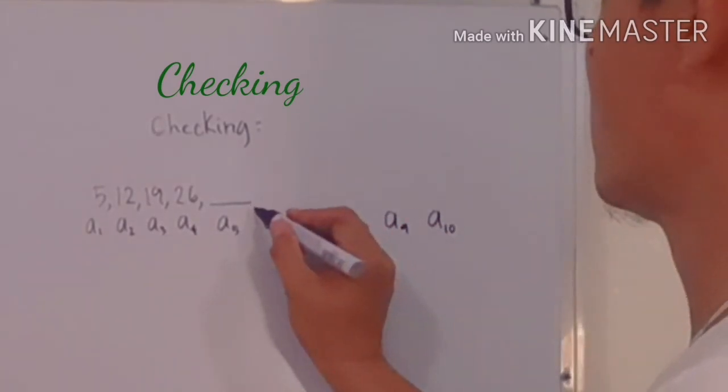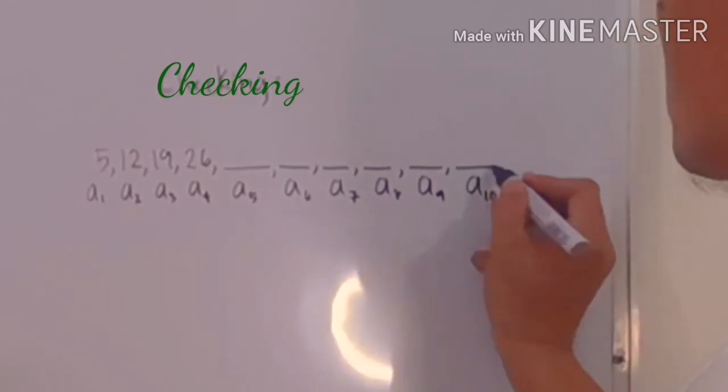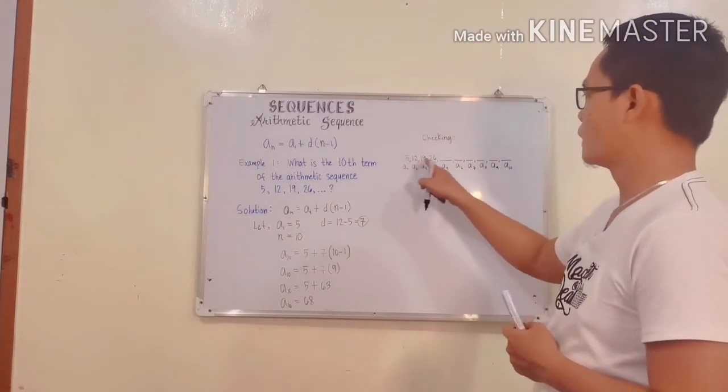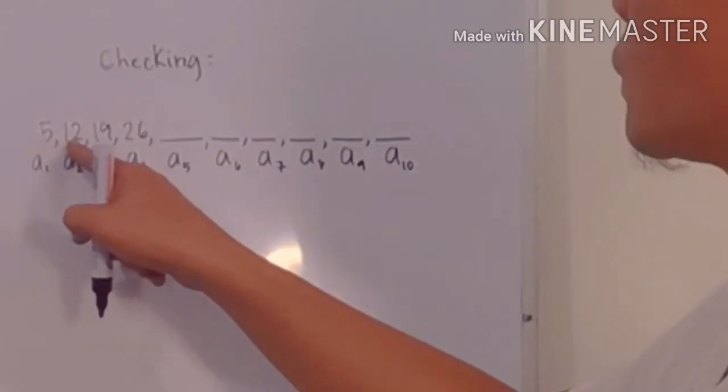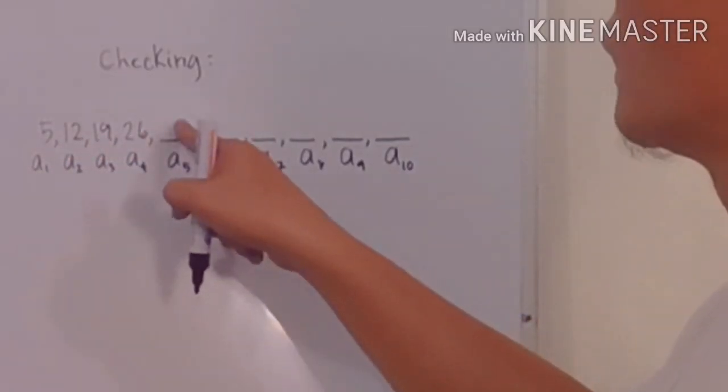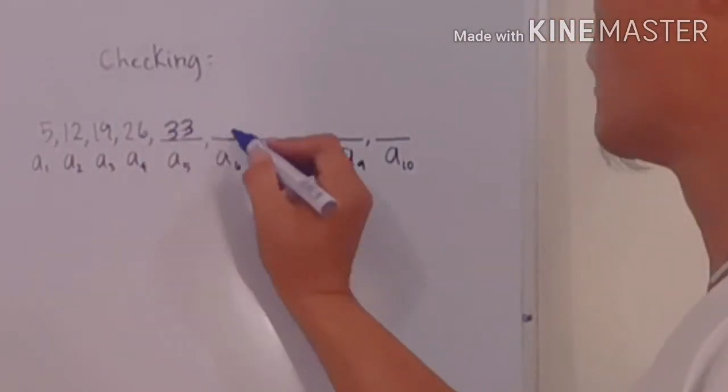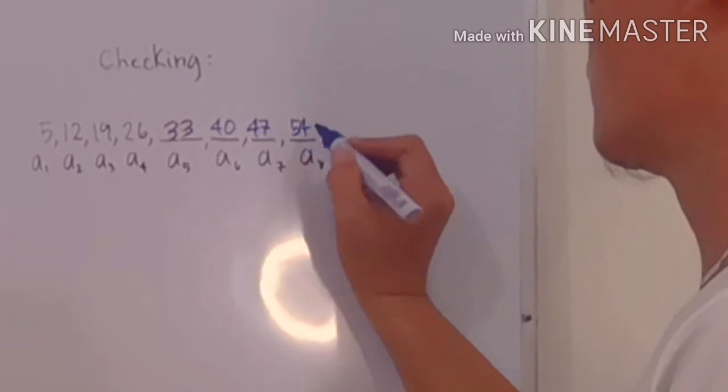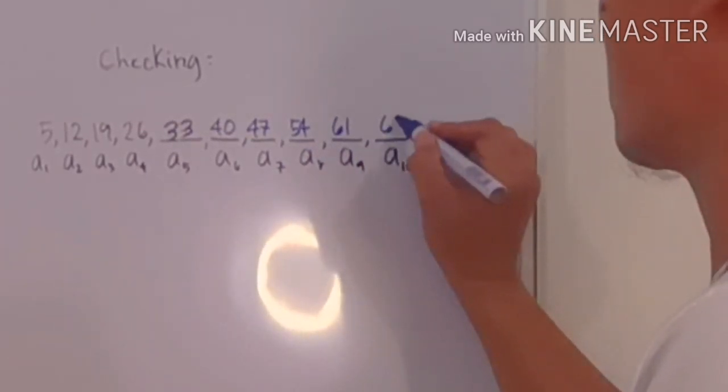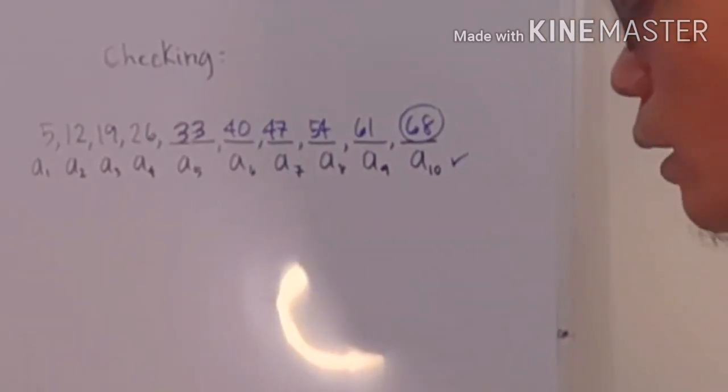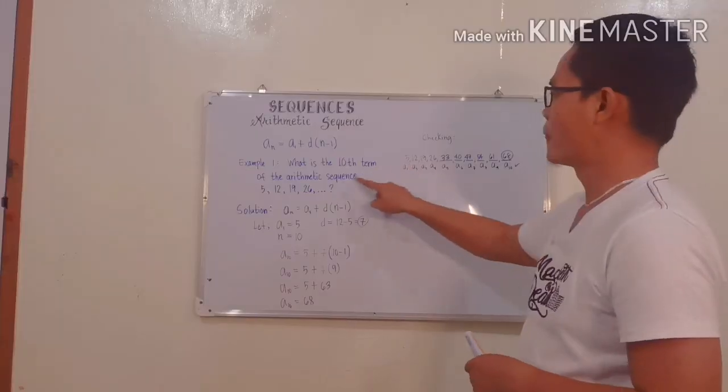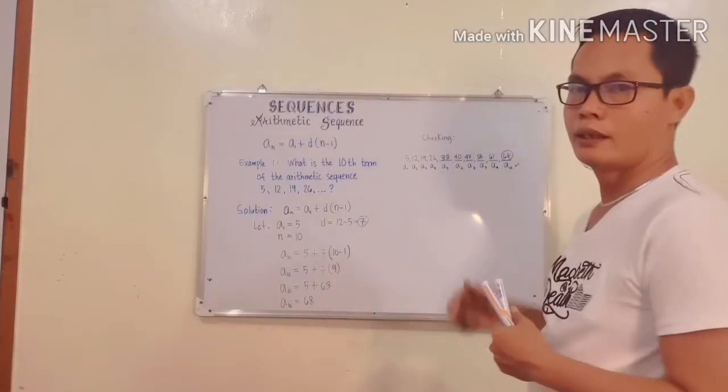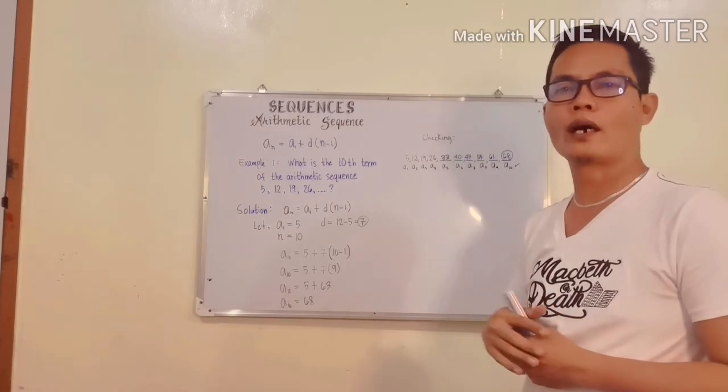Let's just write it in this manner. It's somewhere here just like this one. Checking lang ito - wala ito, hindi to kasama sa solution. Now remember that the value of the common difference is 7. If we are going to add from 26 - since we have 5 plus 7 is 12, plus 7 is 19, plus 7 is 26 - we are going to add plus 7, we have 33 here. Added to 7 again we have 40, added to 7 is 47, plus 7 is 54, plus 7 is 61, plus 7 is 68. We are sure that the 10th term, the value of the 10th term of the arithmetic sequence 5, 12, 19, 26 is 68, because according to this pattern, the 10th term is 68. That's how arithmetic sequence works.